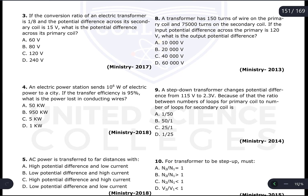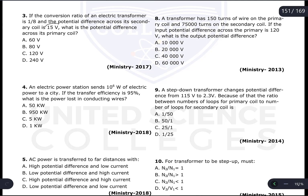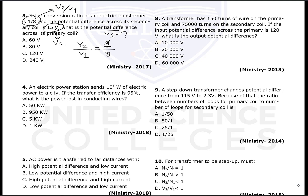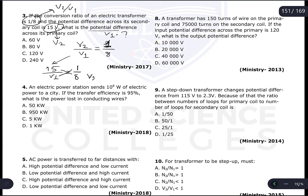Question 3: If the conversion ratio of an electric transformer is 1/8 and the potential difference across the secondary coil is 15 volts (V2), what is the potential difference across the primary coil (V1)? The conversion ratio is V2/V1 = 1/8. Substituting: 15/V1 = 1/8, so V1 = 15 × 8 = 120 volts. The correct answer is 120 volts.